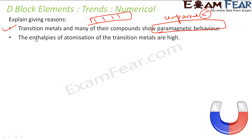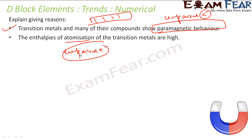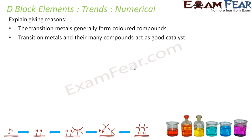The enthalpy of atomization of transition metals is high because of strong metallic bonding. Unpaired d electrons contribute to this strong metallic bond, requiring high energy to convert the metal from solid to gaseous state. Transition metal compounds are also colored due to unpaired electrons — specifically because of d-d transitions. For example, zinc is not colored because its electronic configuration is 3d10 4s2, with all d orbitals completely filled.